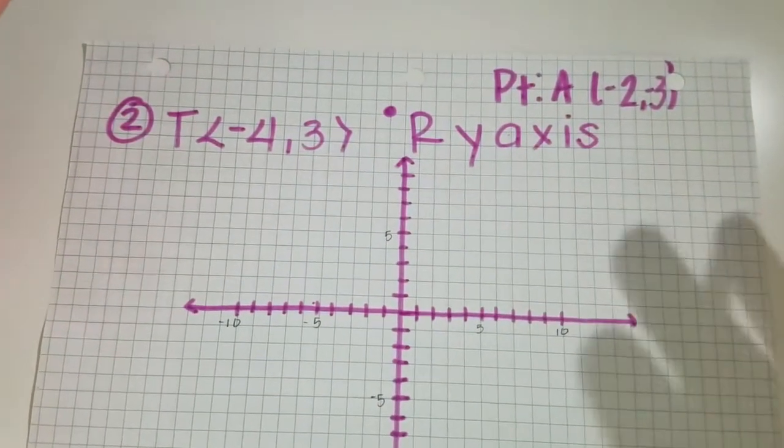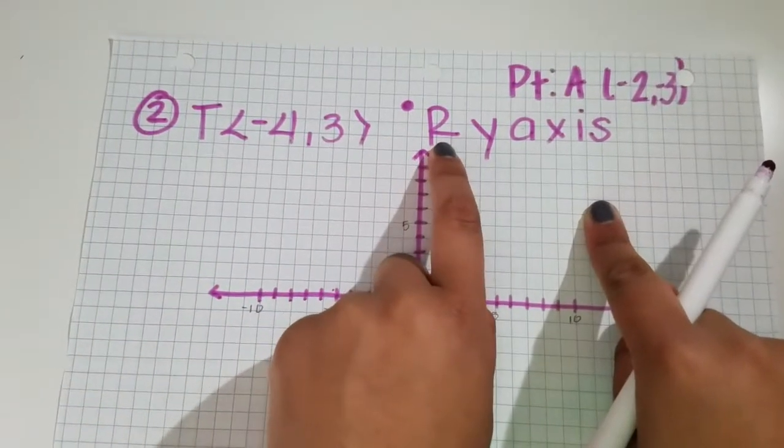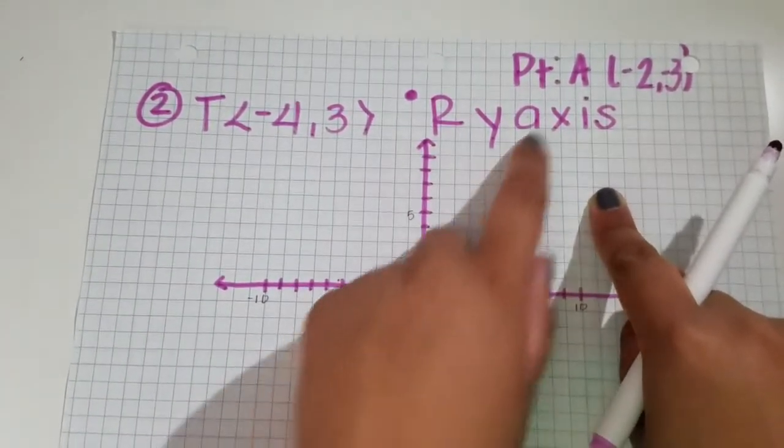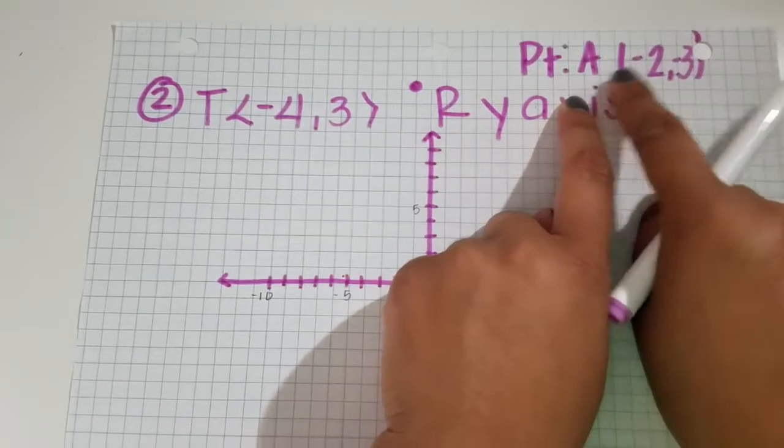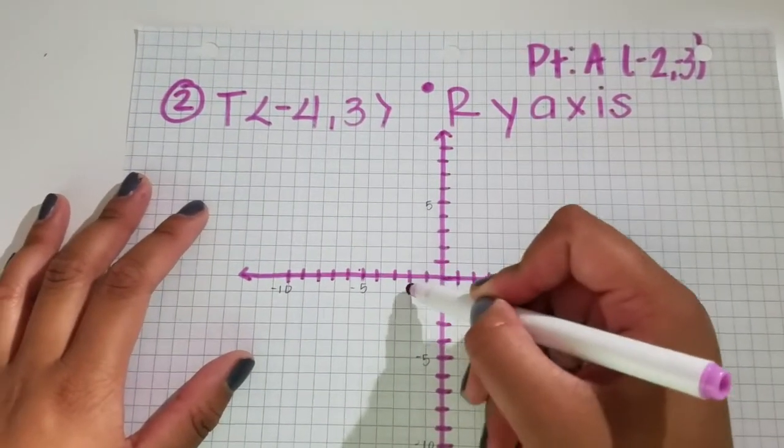My second example is translate <-4,3> and reflect on the y-axis, using point A at (-2,3). So you plot (-2,3).